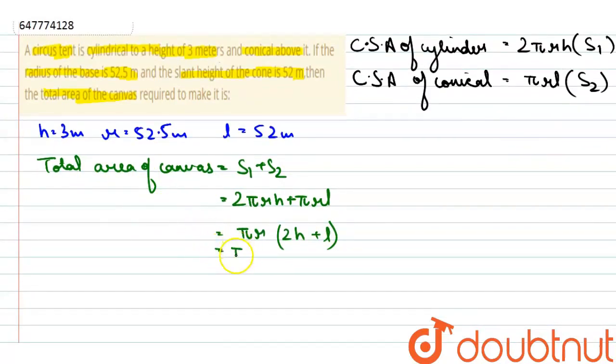Now put the values: π radius is 52.5, multiply by 2h plus L, which is 2 times 3 plus 52, that is 58. So π times 52.5 times 58.